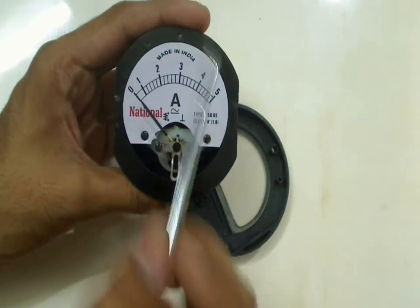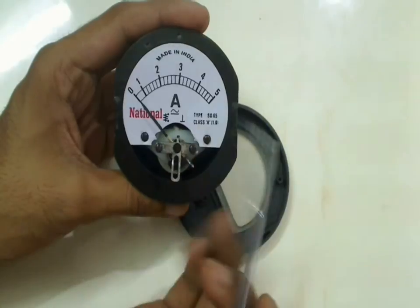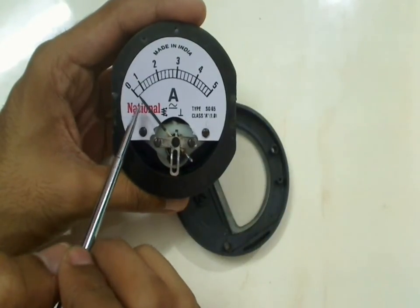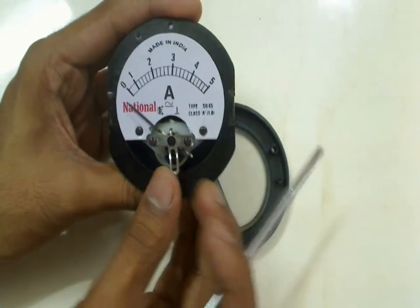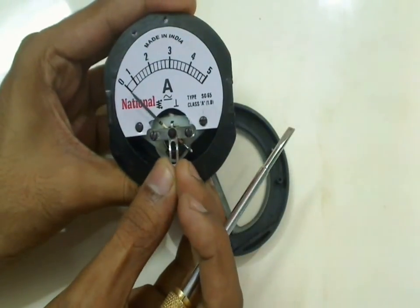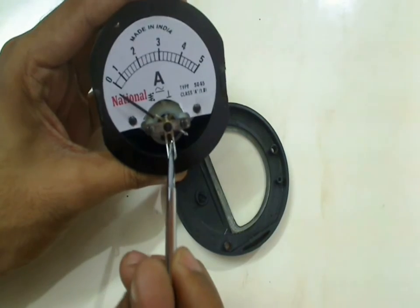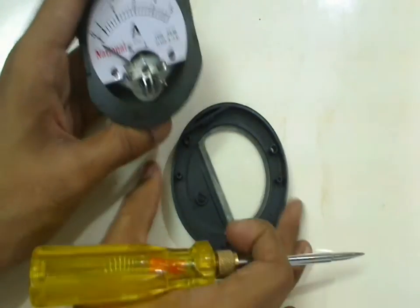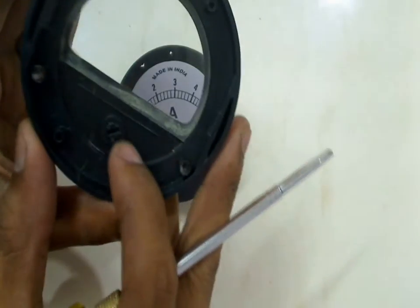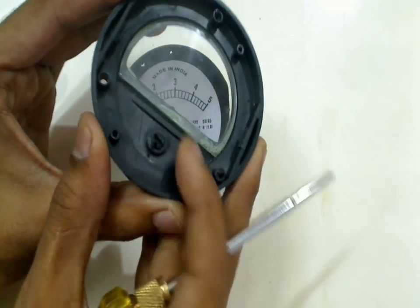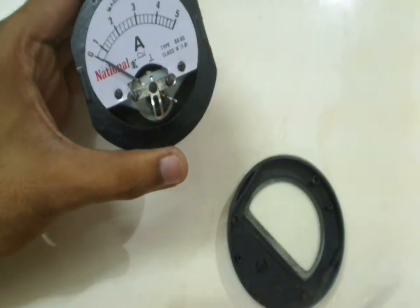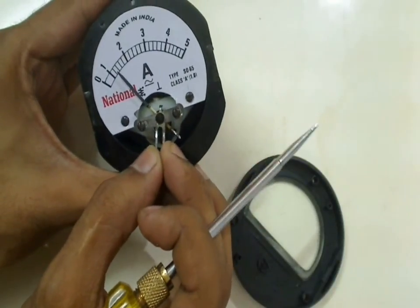This is the panel where the readings are given and as you can see this is the pointer and this is the one which is used to control the pointer. As you can see there is a small hole here which actually sits in this pivot here. So as I turn that pivot, this piece turns and the pointer is changed.